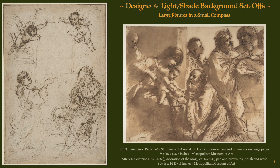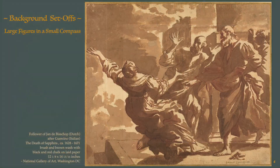There was another element to consider at the disegno stage of a composition. Both these sketches were approached as large figures within a small compass — in other words, the subjects are large, up front, and close, held within a small, confined picture space. Here again we see large figures within a small compass.